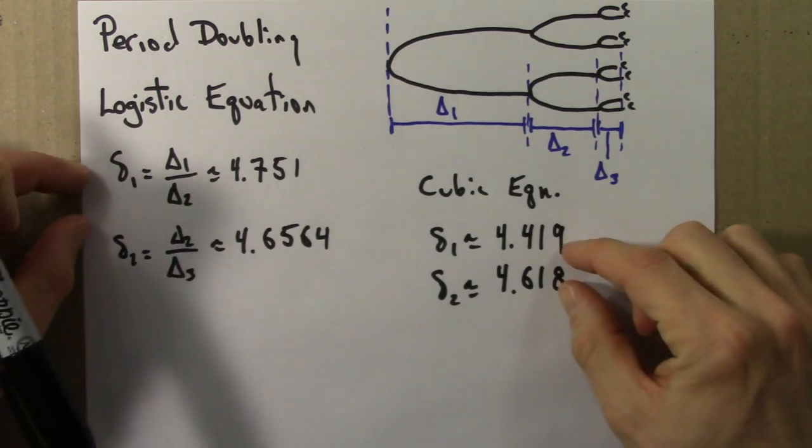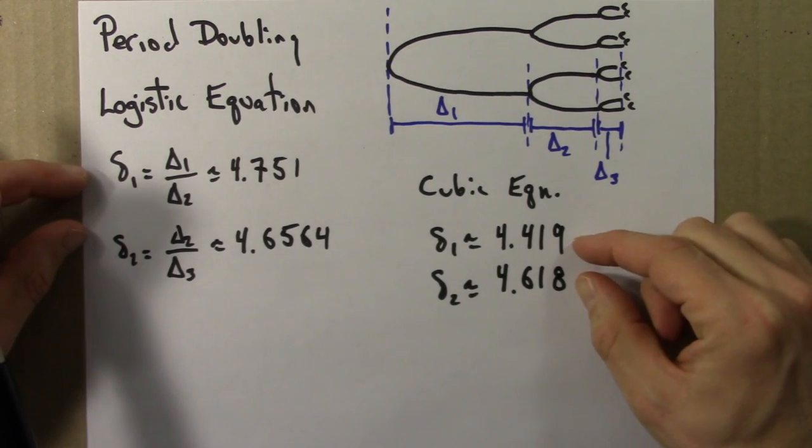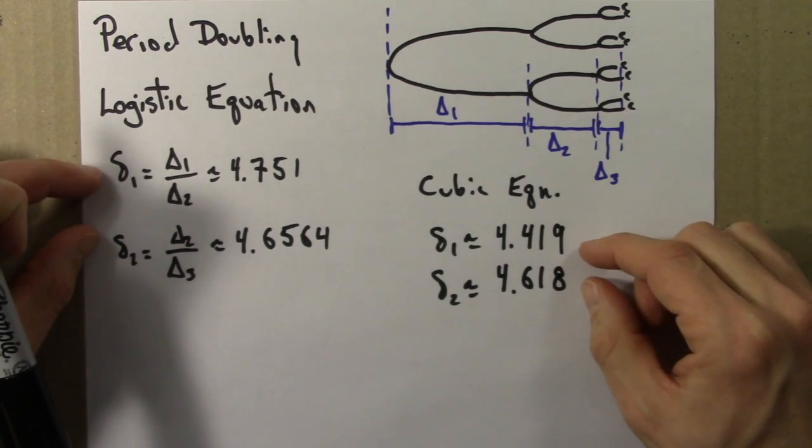So the numbers for delta 1 and delta 2 for these two equations are similar, but not identical.